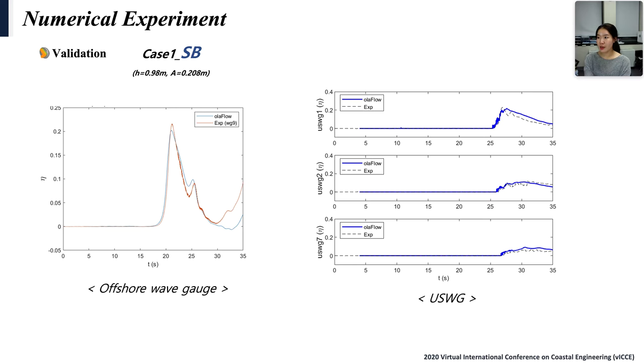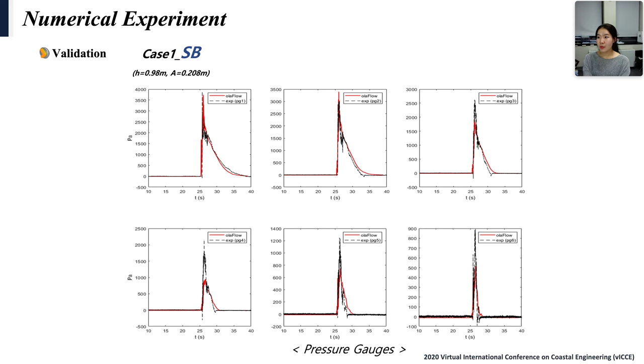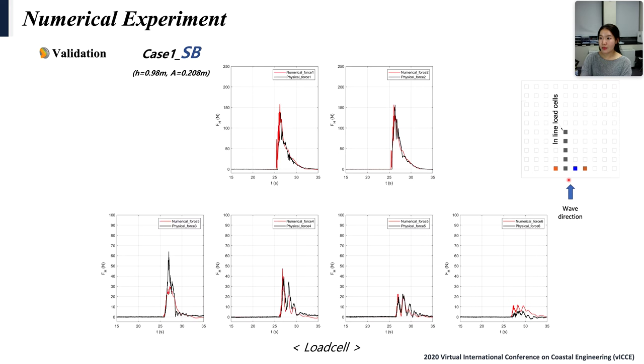After that, what you see here is the validation of numerical results. First, the offshore wave gauge and ultrasonic wave gauges of case 1 seawall with submerged breakwater. Then, pressure gauges. Pressure sensor 1 is located at the very bottom part of structure and pressure sensor 6 is on the highest level. And the numerical results of horizontal force is in excellent agreement with measurements, except load cell 3. This part is still under analysis. The load cell 1 is in here, and 2, 3, 4, 5, and 6.